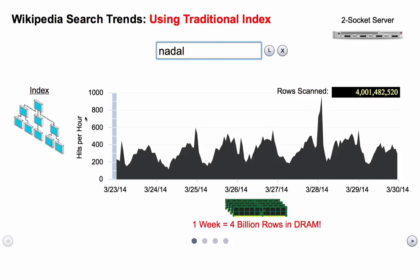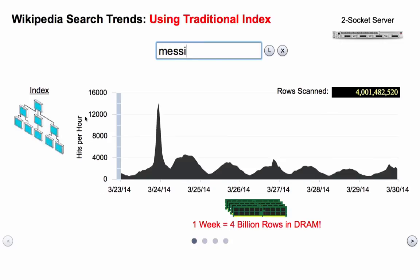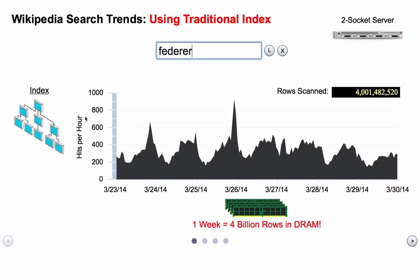This is how you would do it with traditional 11G. We can type a search term and see the graph of how it looks with an analytic index built on it. And what you can see is, even though we have 4 billion rows, with an analytic index it runs essentially instantaneously. It runs in real time.